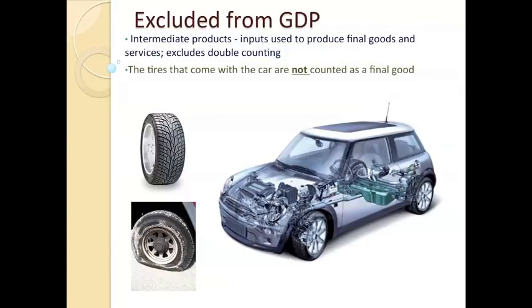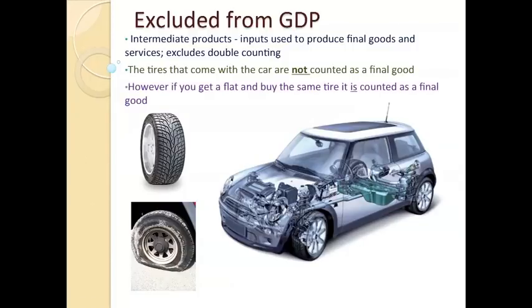Now, if we looked at this car, we see that there are four tires that come with the car. Those are not counted as final goods — they're part of the car sale. However, let's say you drive off the dealership lot and you blow a tire. You need to replace that tire, and you buy a brand new tire for your brand new car. Well, that would count towards GDP because that is a new sale with a new product that is newly produced and adding to our economy's GDP.